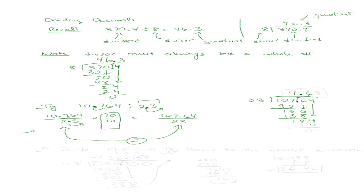Bring down the 4. How many times does 23 go into 184? It goes 8 times. 8 times 3 is 24, carry the 2. 8 times 2 is 16, and 2 is 18. I get a remainder of zero. So my answer is 4 and 68 hundredths.